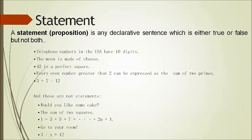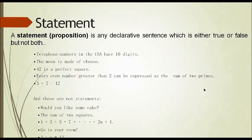A proposition is any declarative sentence which is either true or false, but not both. For example: telephone numbers in the USA have 10 digits; the moon is made of cheese; 42 is a perfect square; every even number greater than two can be expressed as the sum of two primes; and 3 plus 7 equals 12. These are examples of statements.